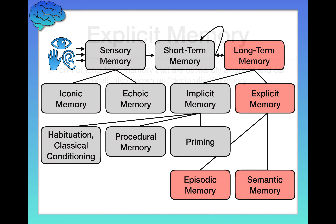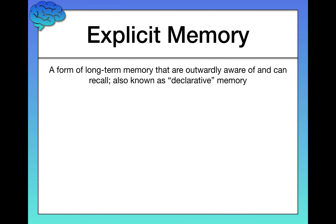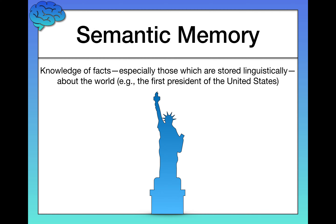Explicit memory is a form of long-term memory that we are outwardly aware of — we can recall it. It's also called declarative memory, versus non-declarative memory, which is another name for implicit memory. Explicit memory is called declarative memory because we can declare it — we can tell people about it. It's specific things we're aware of and can communicate to others.